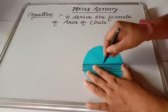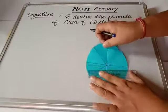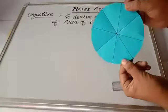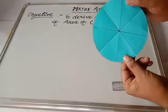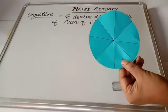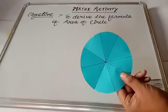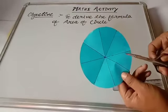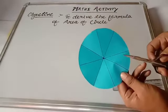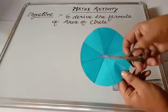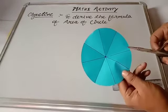Now, students, you can see that this circle is divided into eight sectors. The circle is now divided into eight equal parts.